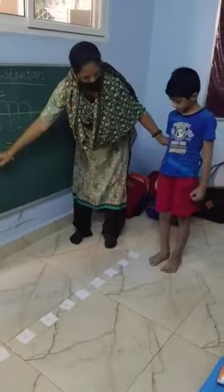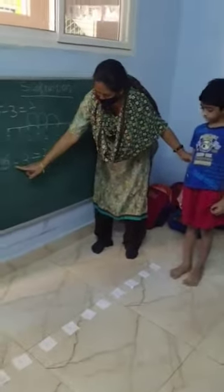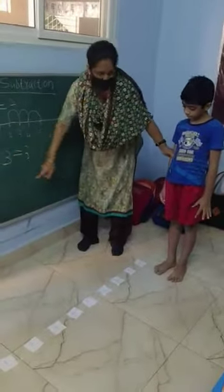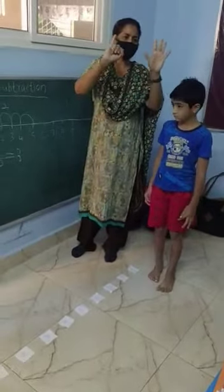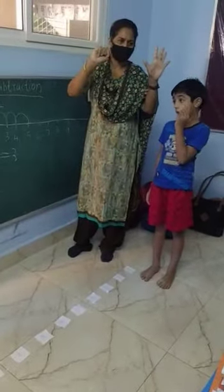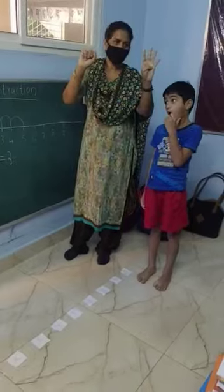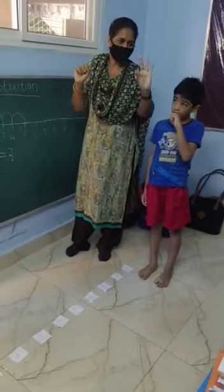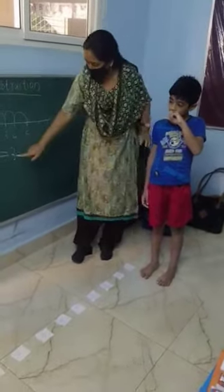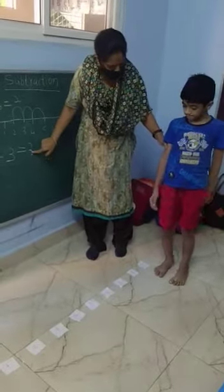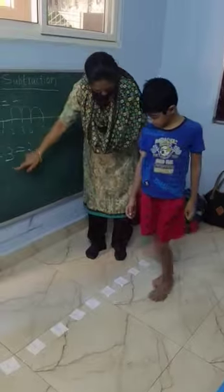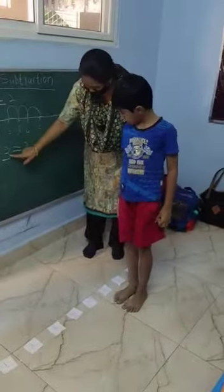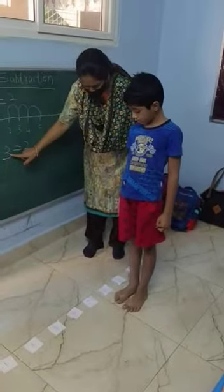Come here. 6 — from 6 you are subtracting 3. 1, 2, 3. How many are remaining? 3. So you write 3. Again, which number is this? 6. How many times do you have to jump backwards? 3.